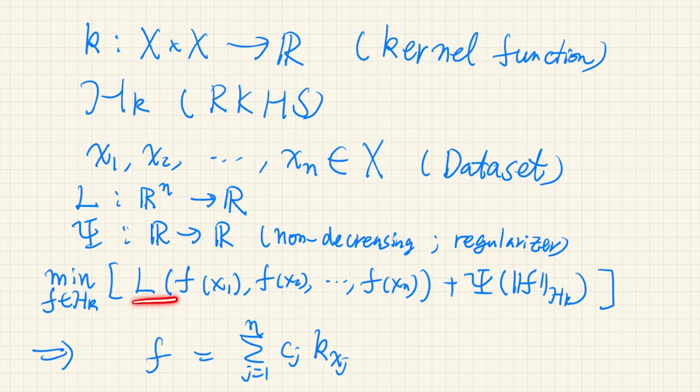Now, we want to minimize the sum of these two functions. L takes the variables f(x1), f(x2), and so on up to f(xn), where f is some function in the Hilbert space, plus the function psi takes the norm of f as its argument.